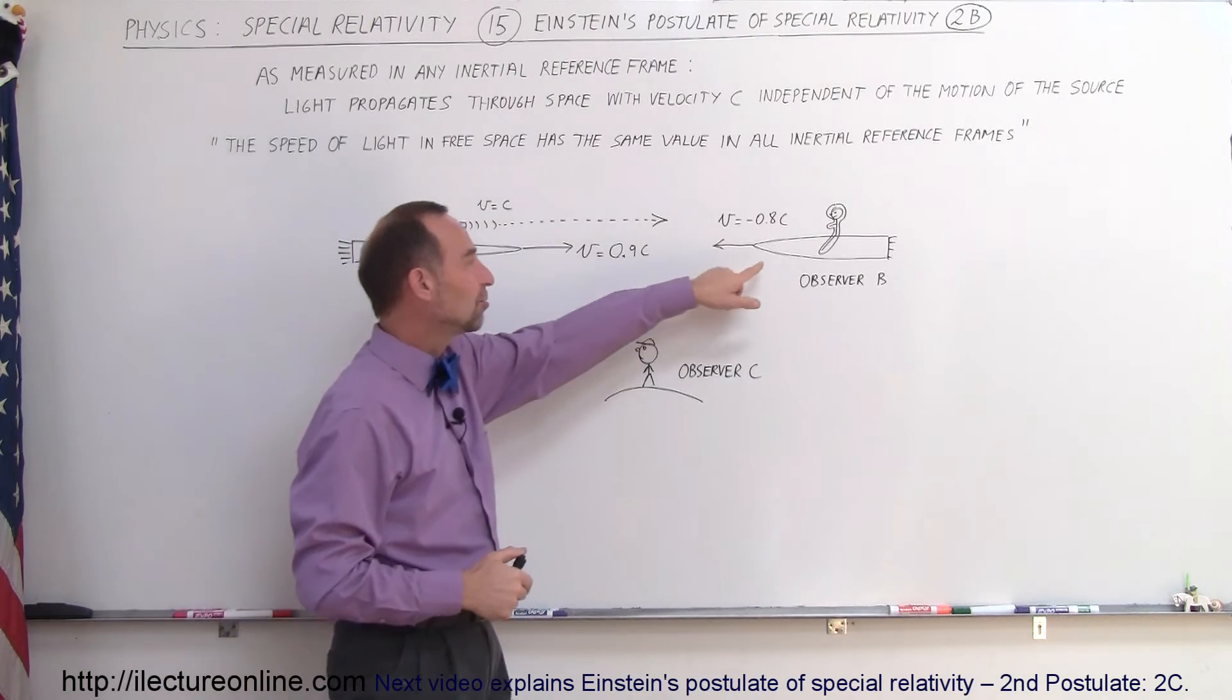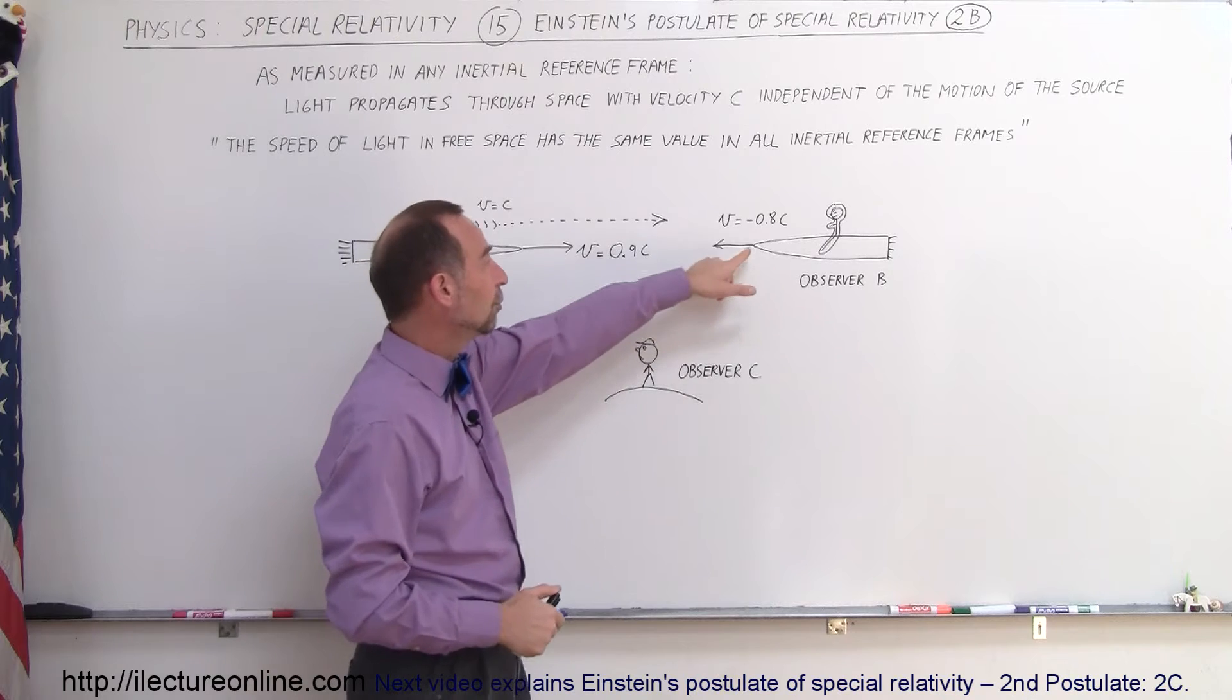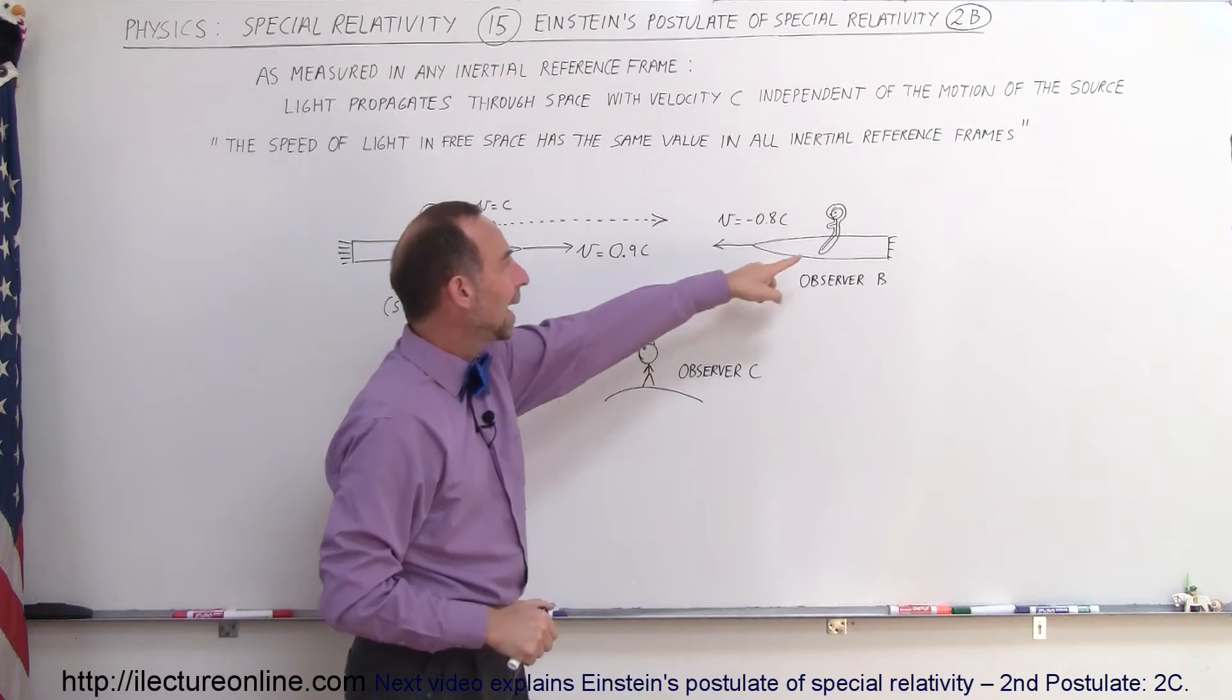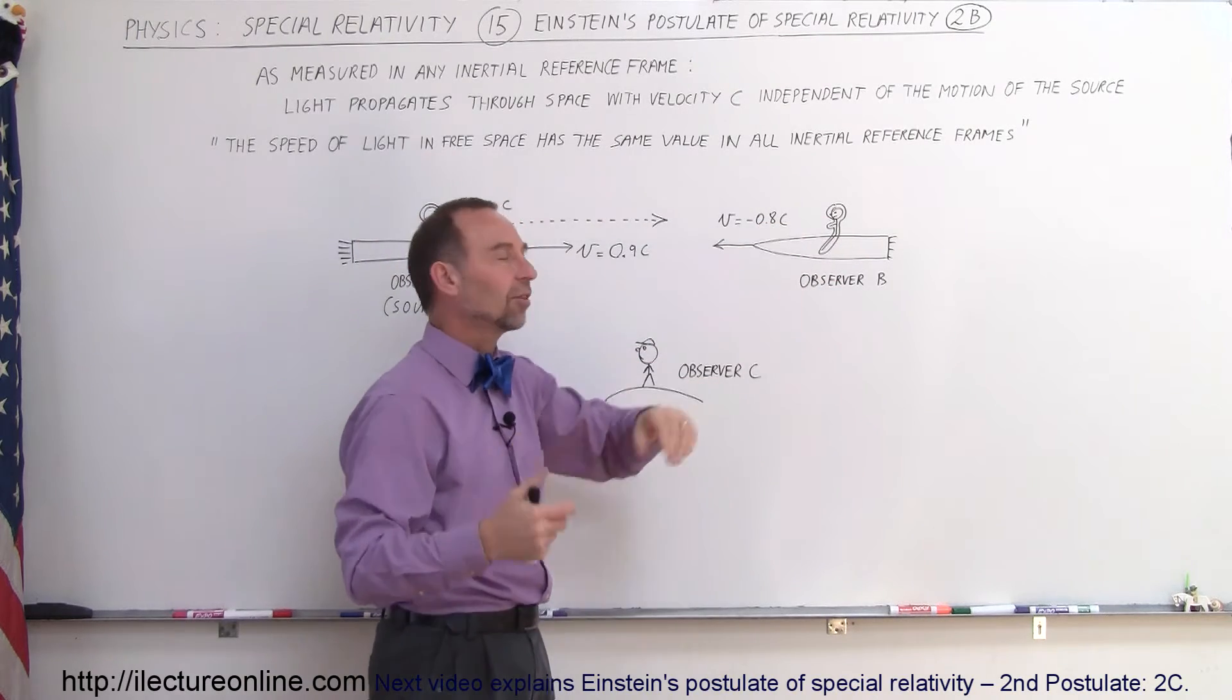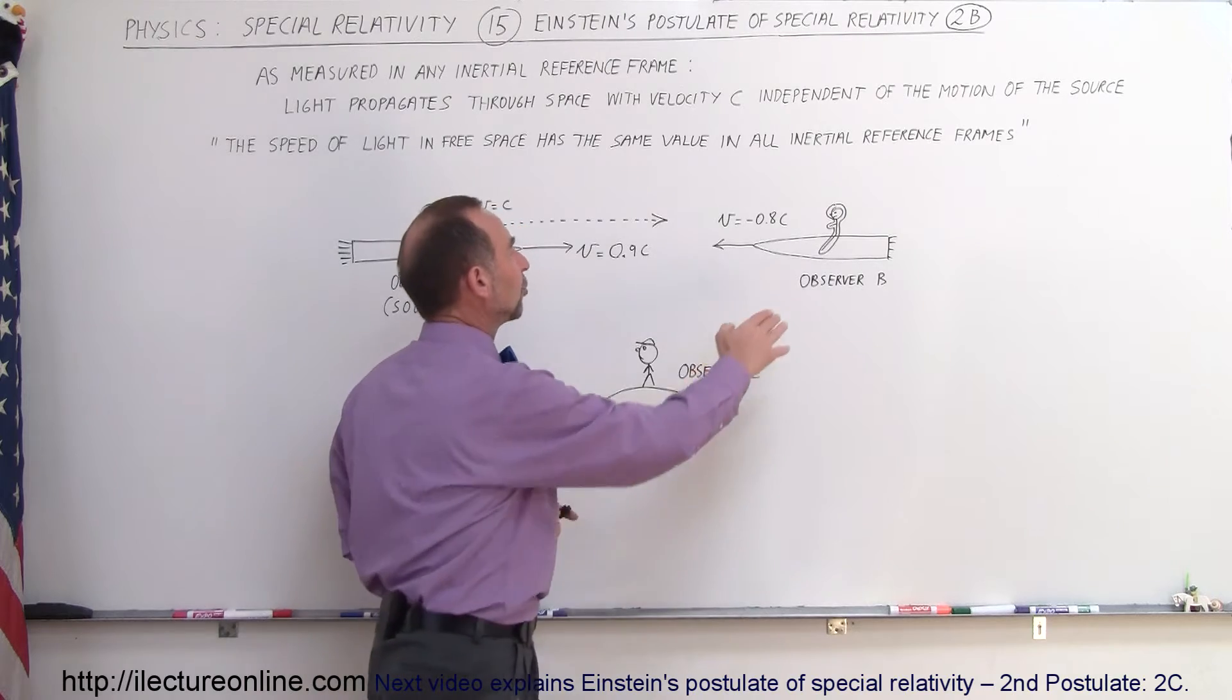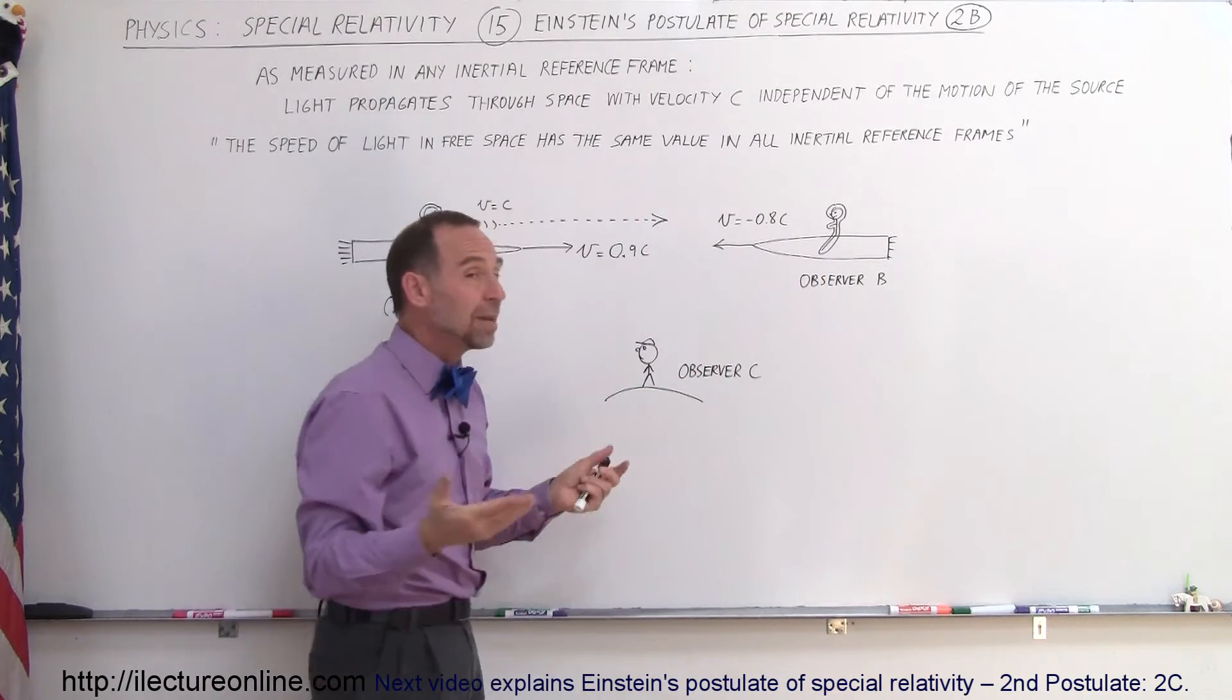And then there's another spaceship coming in the opposite direction, moving at negative 0.8c, because it's towards the left, it's negative direction. And the observer also got bored, sits on top of his spaceship, sees the light approaching from the other spaceship. And observer B sees the light coming towards him now at what speed?